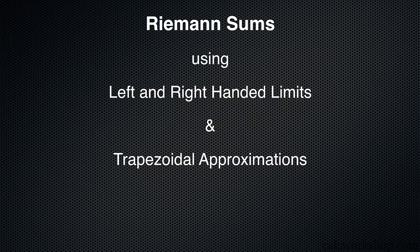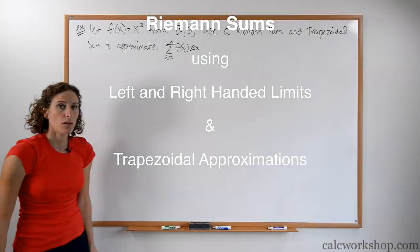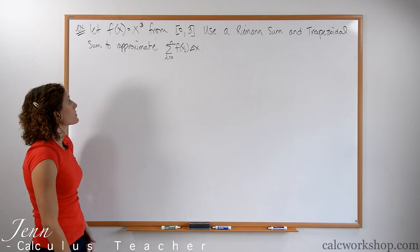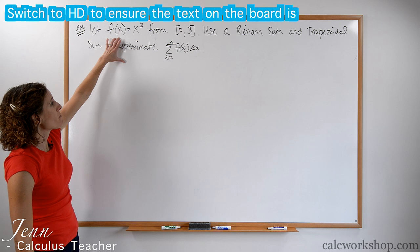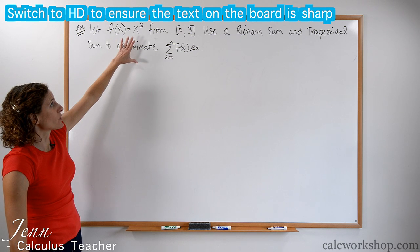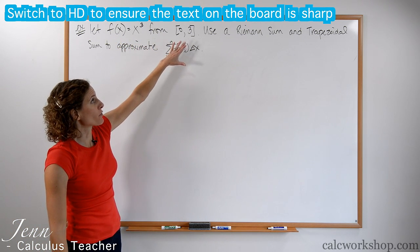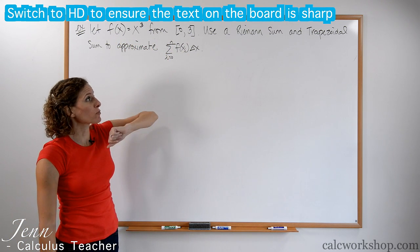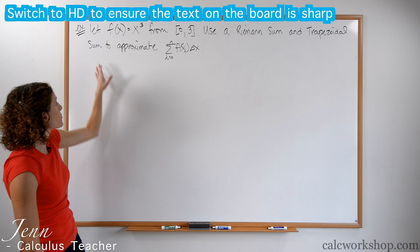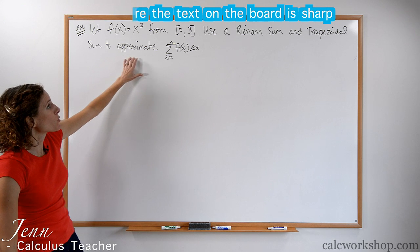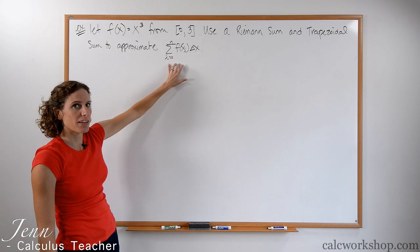Riemann sum example using left-handed, right-handed, and trapezoidal approximations. So it says let f of x equal x cubed from 0 to 3. Use a Riemann sum and a trapezoidal sum to approximate that.